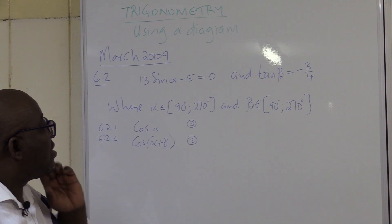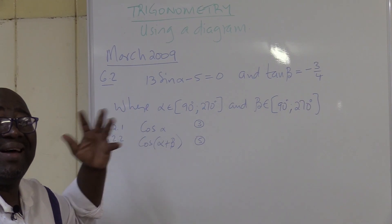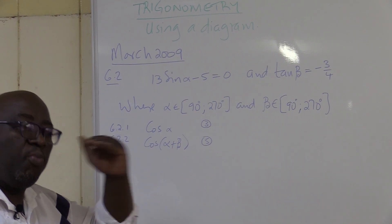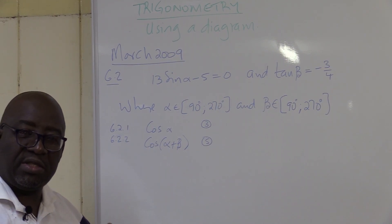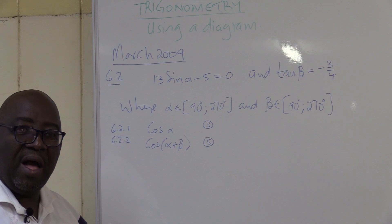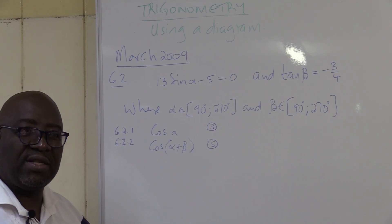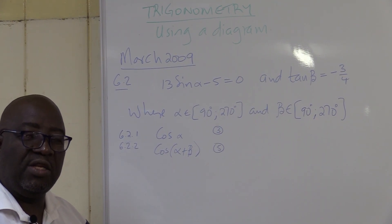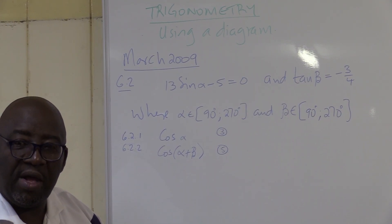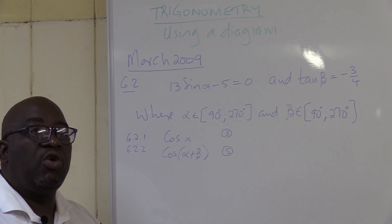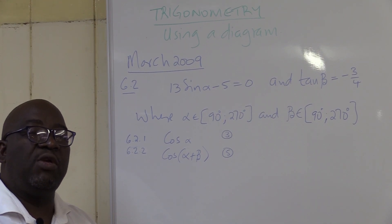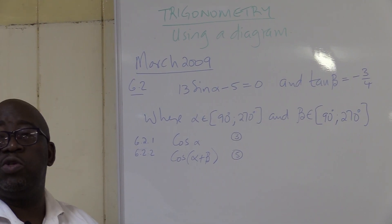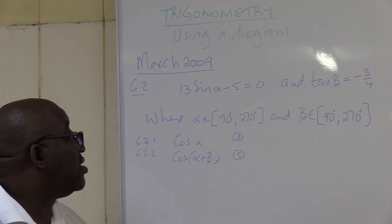The trick is, remember these are ratios. Sine is opposite over hypotenuse. Cosine is adjacent over hypotenuse. Tan is opposite over adjacent. So you must be able to see which side will be opposite and which one will be adjacent.